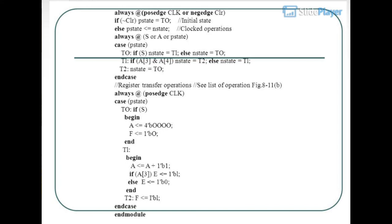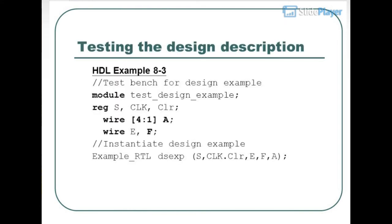Register transfer operations (list of operations, Figure 8-11b): Always at posedge CLK. State BOOT: if S, begin A<=4'b0, F<=1'b0; end. DL: A<=A+1. T1: if A3, E<=1'b1; else E<=1'b0. T2: F<=A[4]. End module. This completes testing the design description.